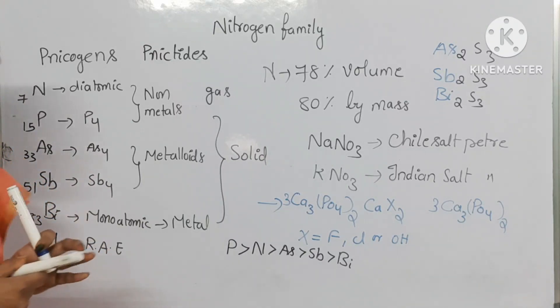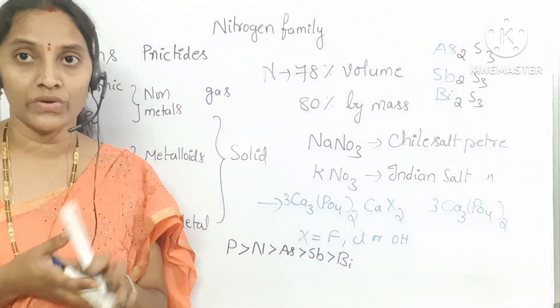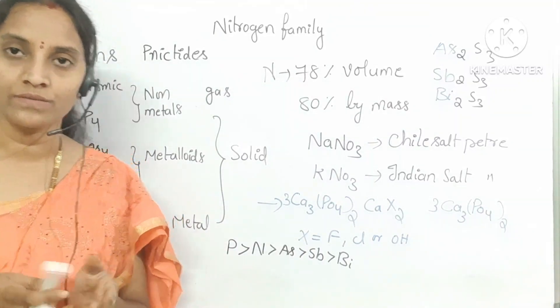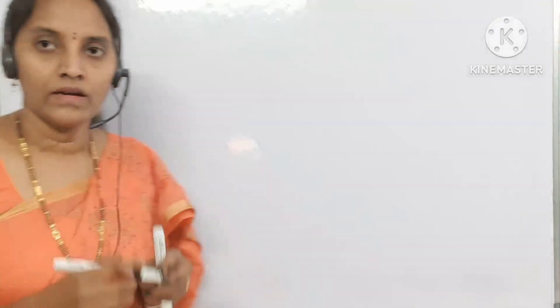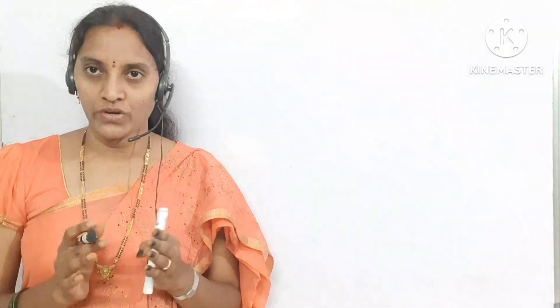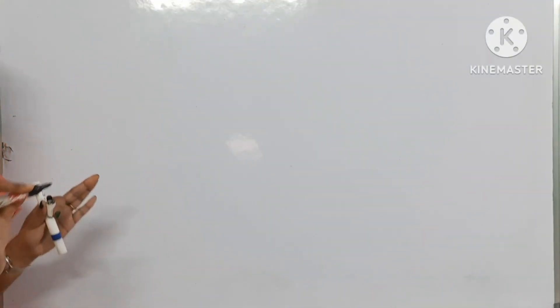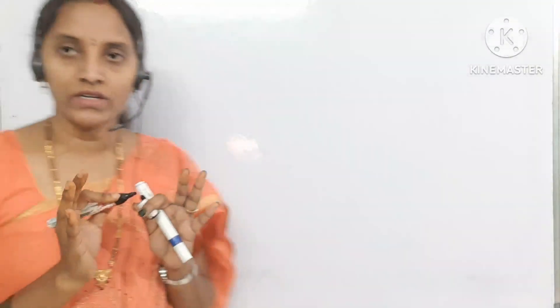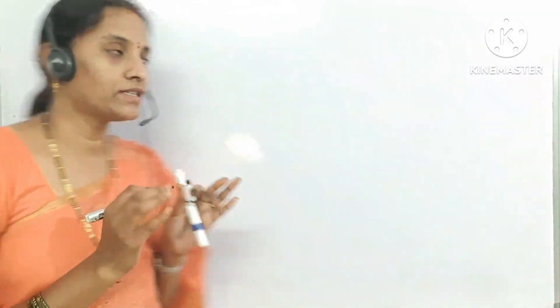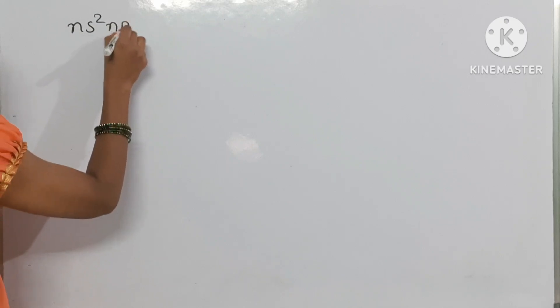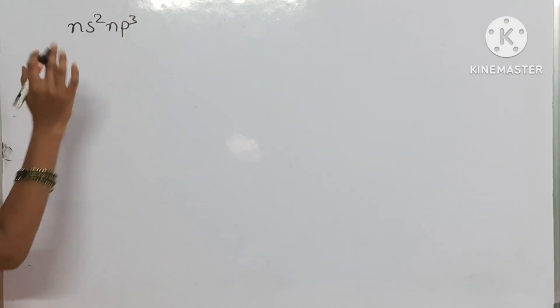Coming to their general properties — first, electronic configuration. The general electronic configuration for 15th group elements is ns²np³. For nitrogen, taking the nearest noble gas helium as reference, the outer shell configuration is 2s²2p³. For phosphorus, with neon as reference, it is 3s²3p³.